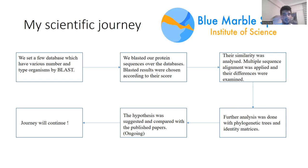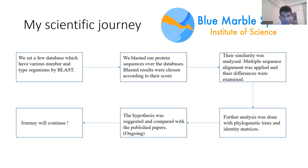I set up a database at the start of my project using BLAST. These databases contain different numbers of organisms. I have some query sequences of my proteins, and I blasted them against my database to obtain scores. From these scores, I performed a similarity analysis using multiple sequence alignment and identity matrices. I also constructed phylogenetic trees, which are very important to see the differences between evolution patterns.